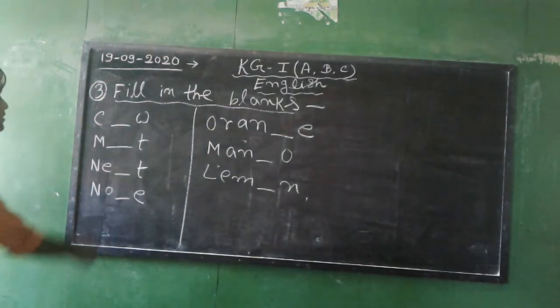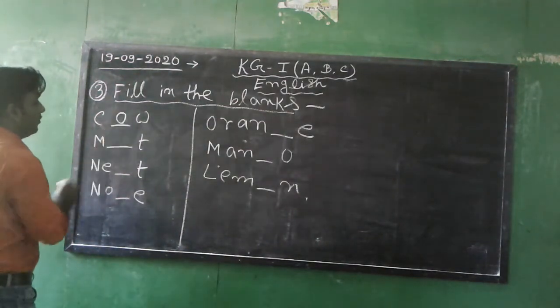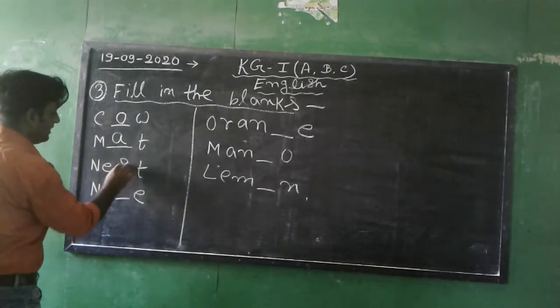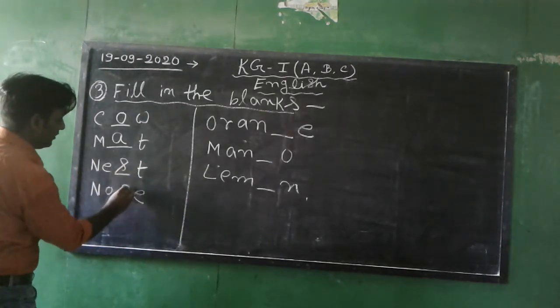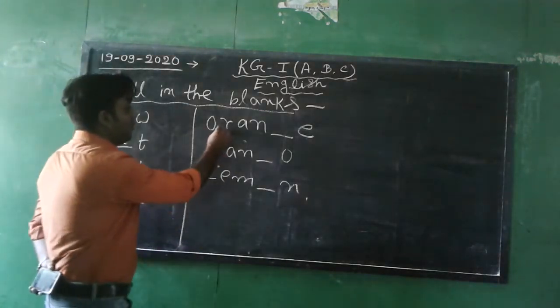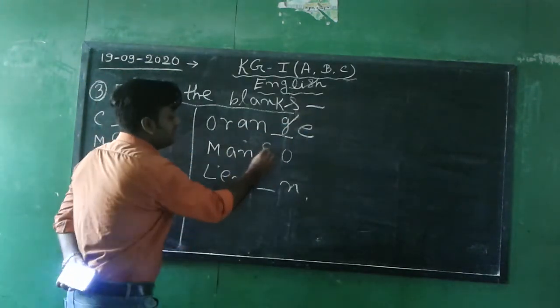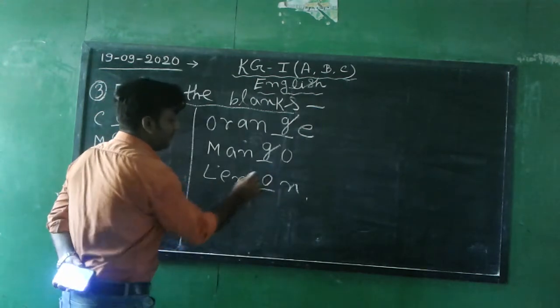Okay, first COW, C-O-W. MAT, M-A-T. NEST, N-E-S-T. NOSE, N-O-S-E. ORANGE, O-R-A-N-G-E. MANGO, M-A-N-G-O. And LEMON, L-E-M-O-N.